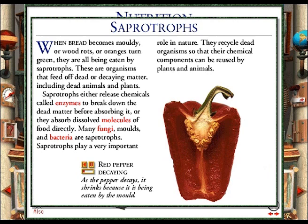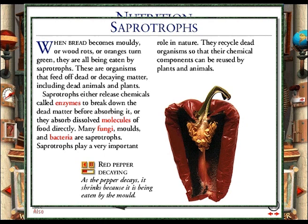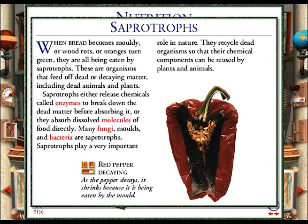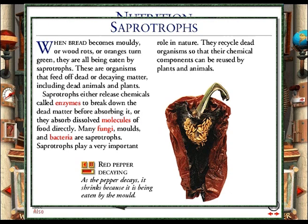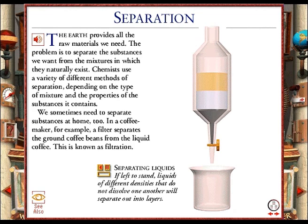After being cut open, a pepper shrinks a little as it dries out. After a week, a mould carried on the air starts to feed on the pepper. The mould breaks the flesh down and absorbs the resulting chemical components. Then the pepper shrinks even more. The mould takes longer to break down the stalk, seeds and tough outer skin.